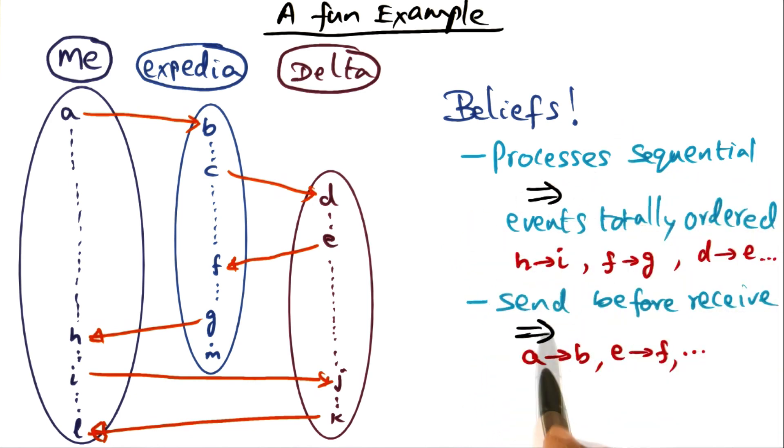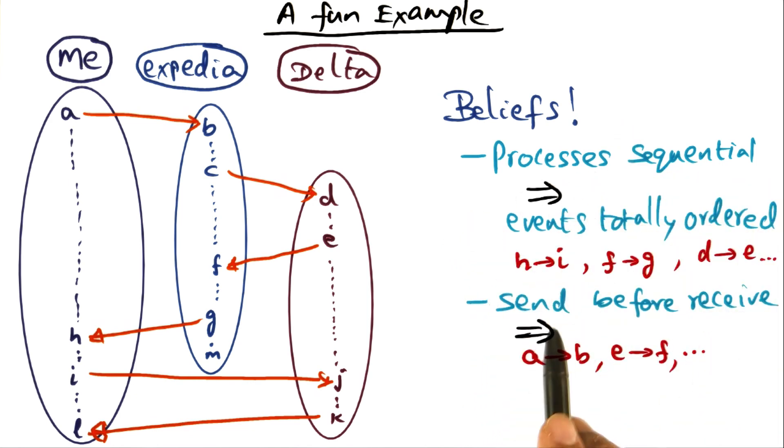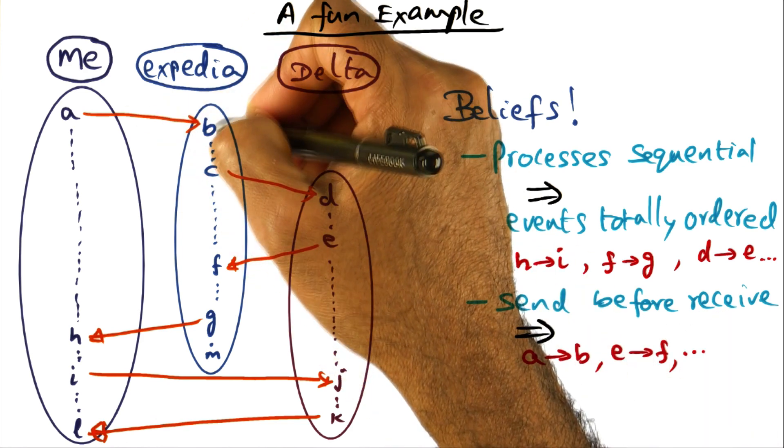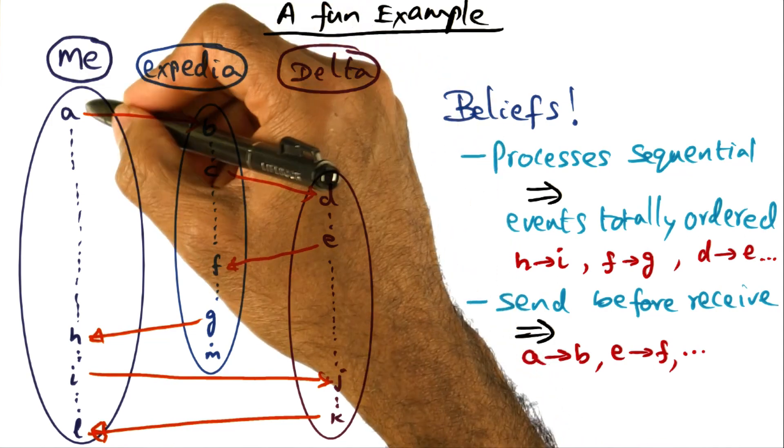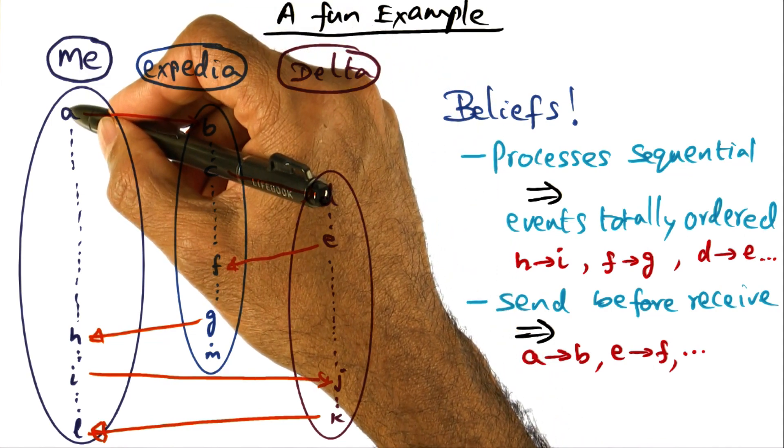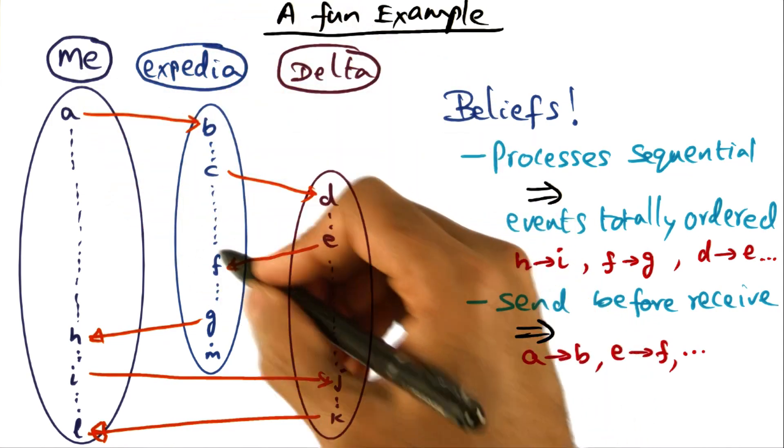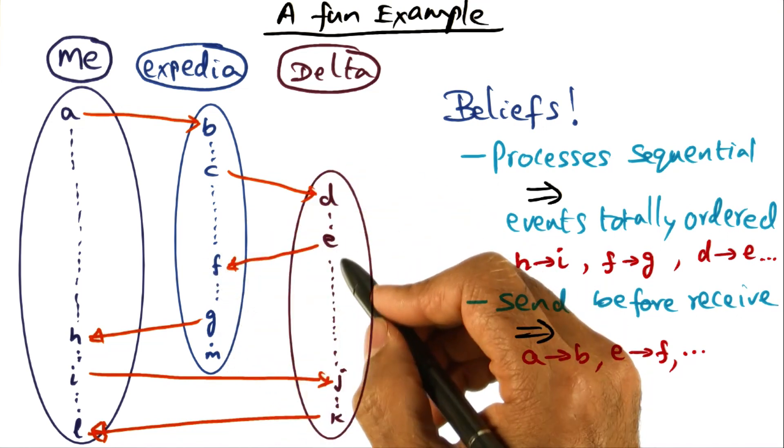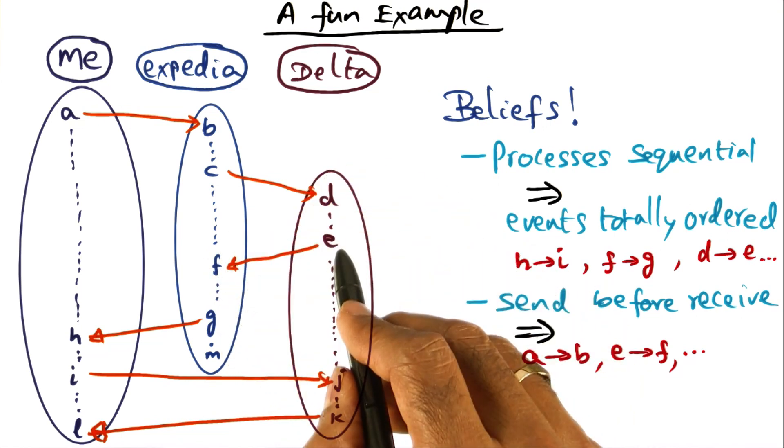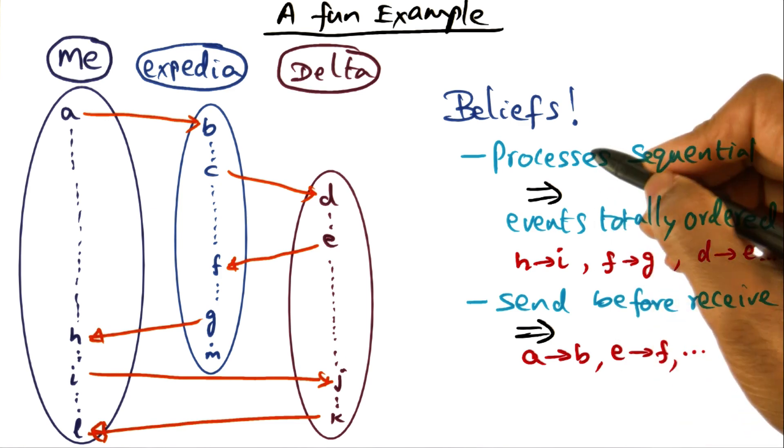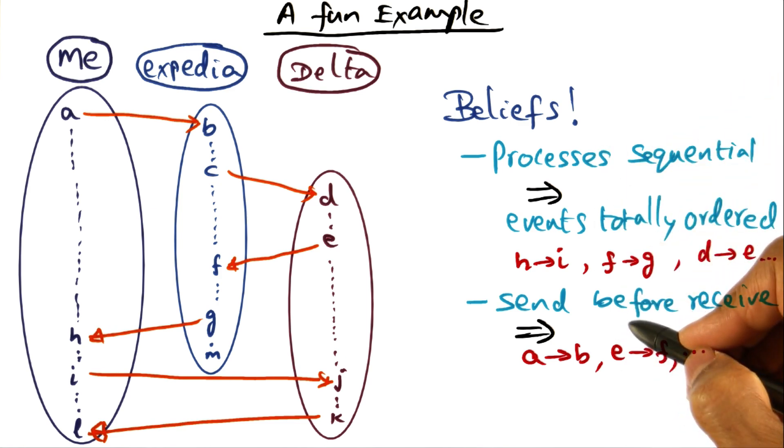The other belief is that you cannot have a receipt of a message before the send is complete, right? So you have to send the message before it can be received. Or in other words, the receipt of a message, which is B here, has to happen after the message has been sent from here. Similarly, this message reception F must have happened after the message was sent from Delta. So those are the core beliefs that we have about what is happening with events in a distributed system.